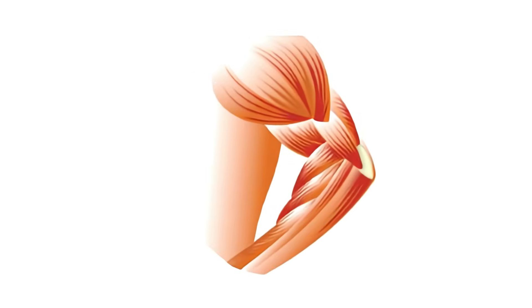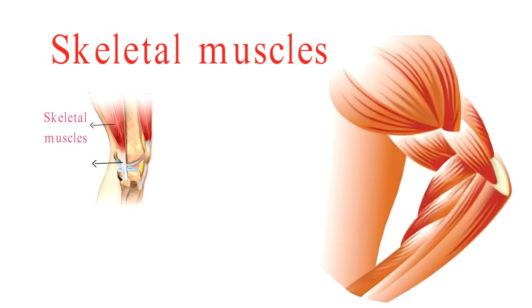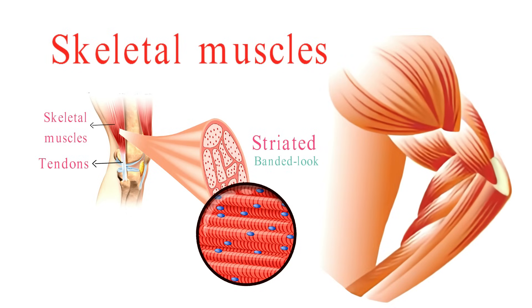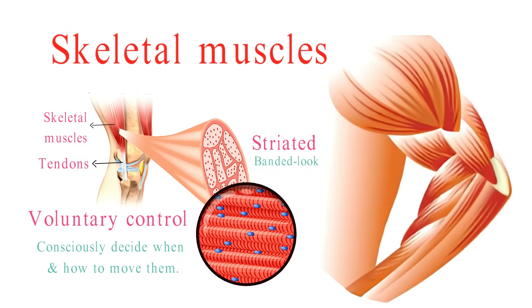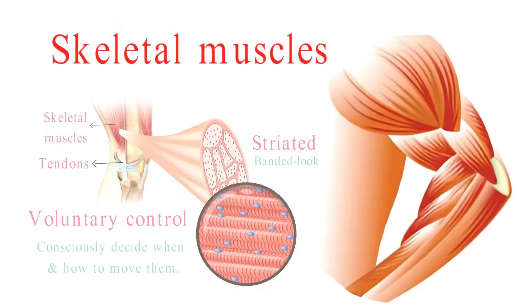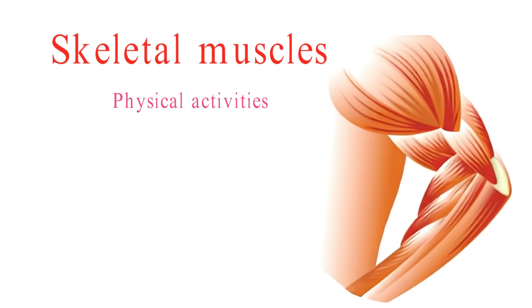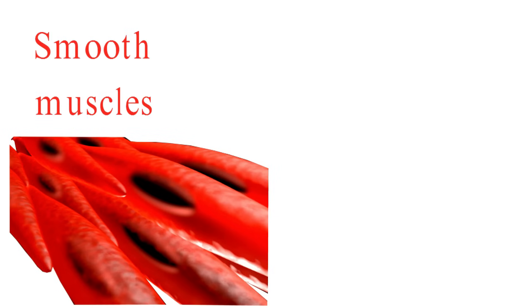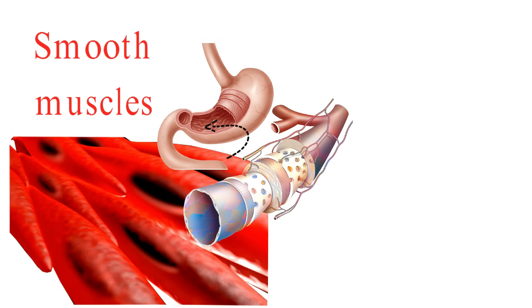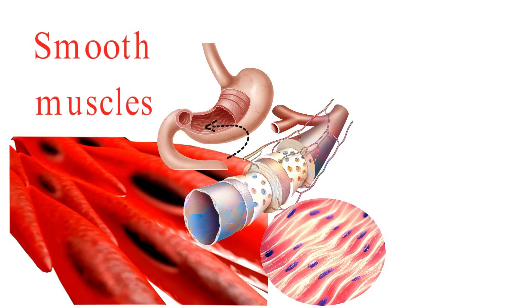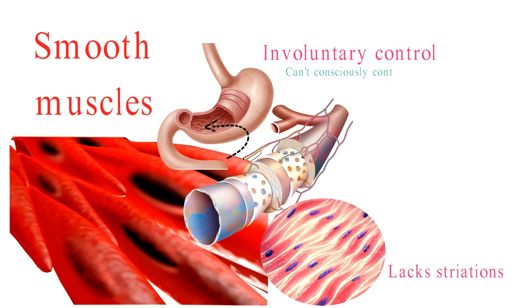Let's start with skeletal muscle tissue. It's attached to our bones by tendons throughout our body. Under a microscope, it appears striated, giving it a striped or banded look. Importantly, skeletal muscles are under voluntary control — that means we can consciously decide when and how to move them. Skeletal muscles are responsible for all those physical activities we love, like walking, running, and lifting. Now, let's move on to smooth muscle tissue. It lines the walls of various internal organs, like the digestive tract and blood vessels.